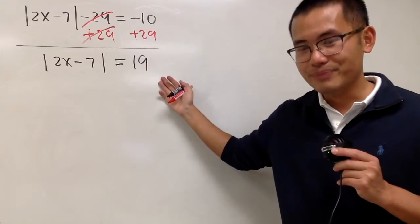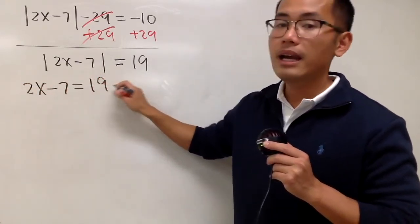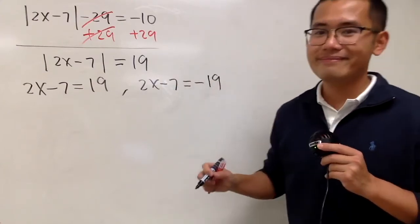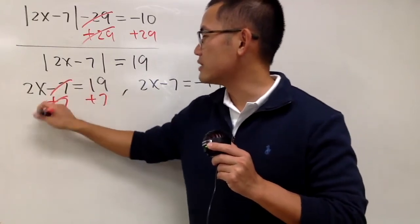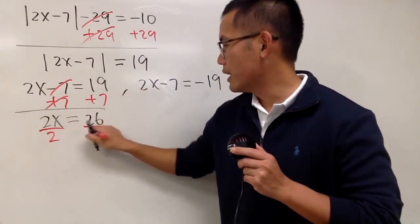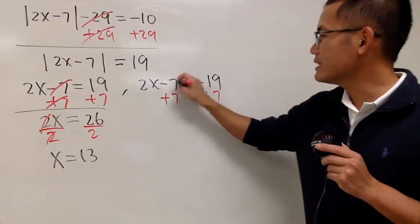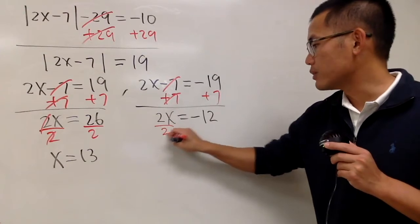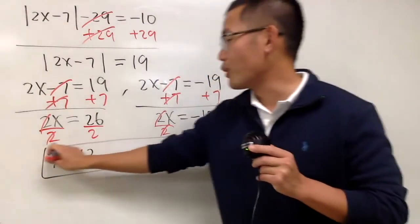So we do have to continue. First, remove the absolute value and solve 2x minus 7 equals positive 19. The second equation is 2x minus 7 equals negative 19. For the first: add 7 on both sides, giving 2x equals 26, then divide by 2 to get x equals 13. For the second: add 7 on both sides, giving 2x equals negative 12, then divide by 2 to get x equals negative 6. Both are answers — be sure to include both.